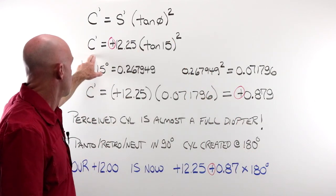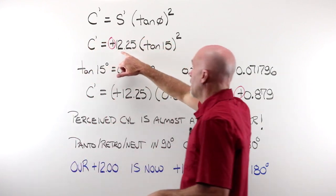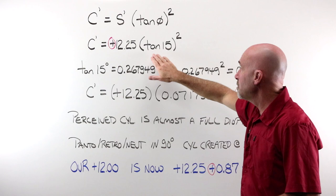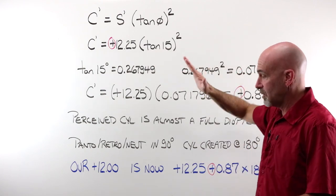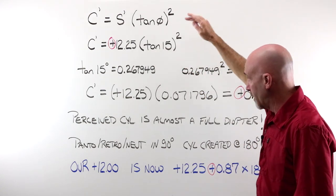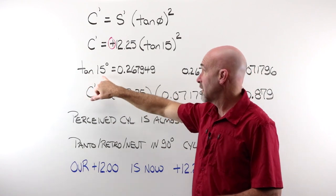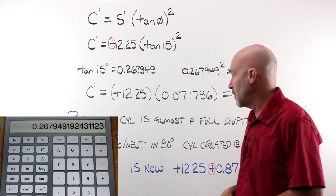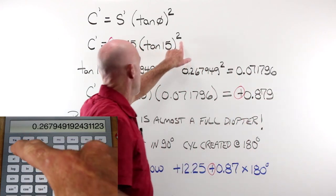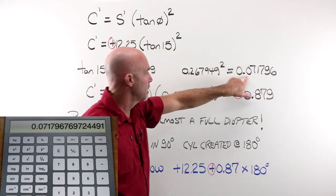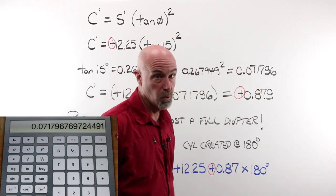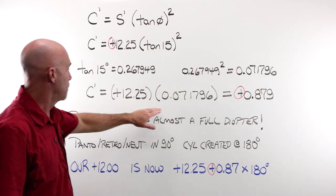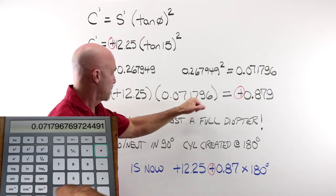Our perceived new cylinder amount is equal to our new sphere power, our plus 12.25, multiplied times the tangent of our 15 degrees of tilt, squared. If you plug 15 into a scientific calculator and hit the tangent button, you end up at 0.26. We're told we need to square that. We square it, we end up at 0.071.